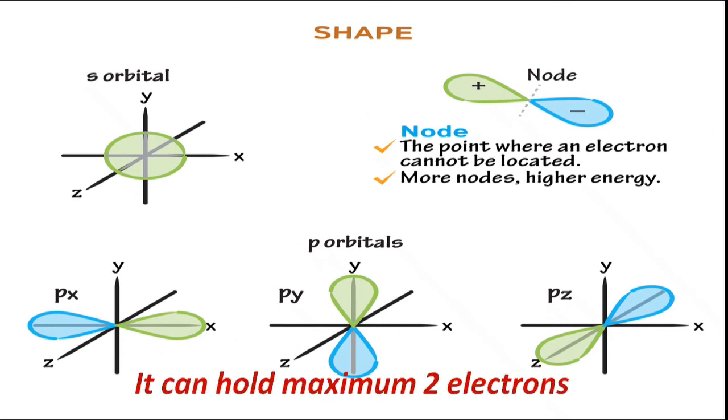The number of electrons in atomic orbitals are two, or it can hold maximum two electrons. Atomic orbital can hold two electrons having opposite spin. More about different quantum numbers are given in quantum number video.